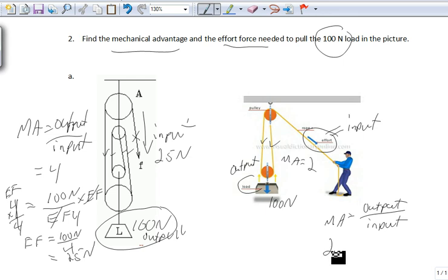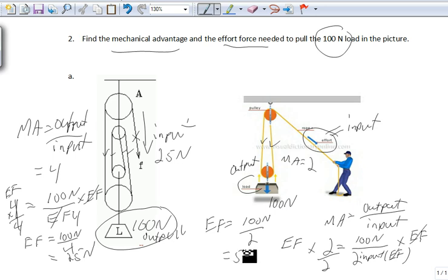Okay. So MA is 2, output is 100 newtons, and we don't know the input, or sometimes that's called the effort force. Okay. Let's times both sides by effort force. And times this side by effort force. Let's divide both sides by 2. Let's tidy it up. Effort force equals 100 newtons divided by 2.